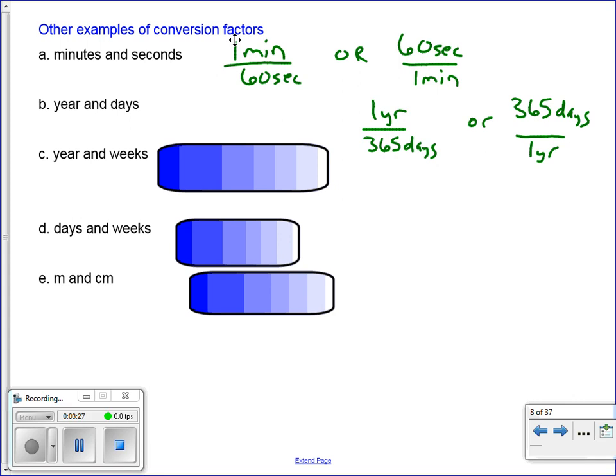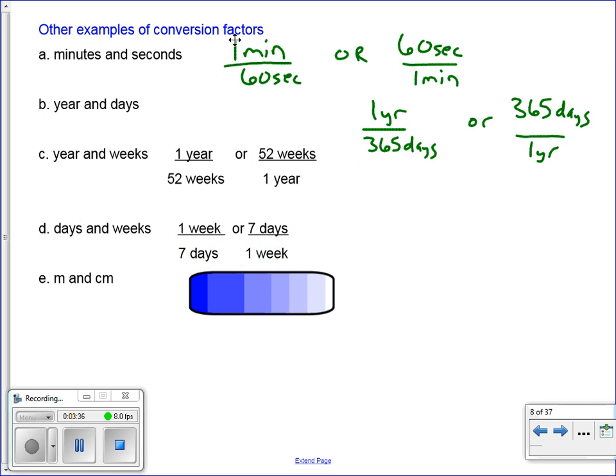So take a moment and do year and weeks, days and weeks, and meters and centimeters. Pause the video. I hear it back. One year is 52 weeks. One week is seven days. And then one meter equals 100 centimeters.